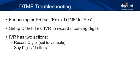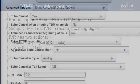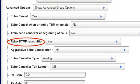The first thing to check when dealing with DTMF issues over analog or PRI trunks is to make sure that the DTMF is relaxed in the channel group settings. This setting basically relaxes the software's strictness when listening for DTMF tones.